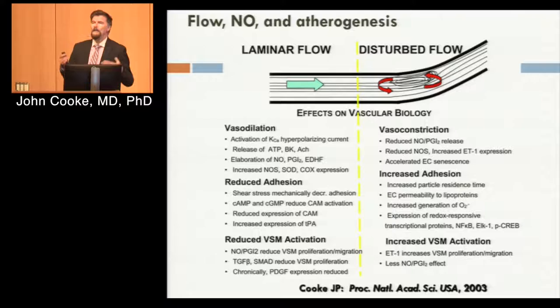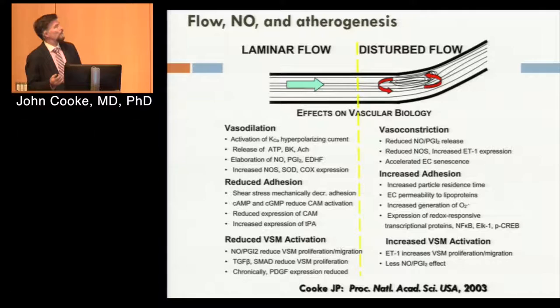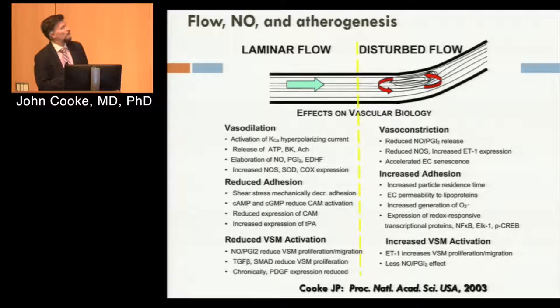In a normal vessel with normal blood flow and nice laminar shear stress, the tractive force of fluid flow causes the endothelium to release nitric oxide, which is beneficial, as well as prostacyclin. Normal laminar flow produces many beneficial effects, chief among them the release of nitric oxide to maintain the vessel in a homeostatic state — causing vasodilation and preventing things from sticking.